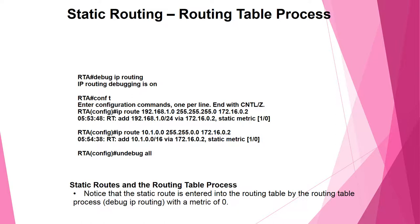In this lecture we will be discussing routing and routing protocol part 2: static routing, routing table process, and debug IP routing. Debug IP routing is on. We enter configuration mode with config t, one command per line, and exit with Control-Z. A static route entered into the routing table by the routing table process with a metric of 0 appears via debug IP route.